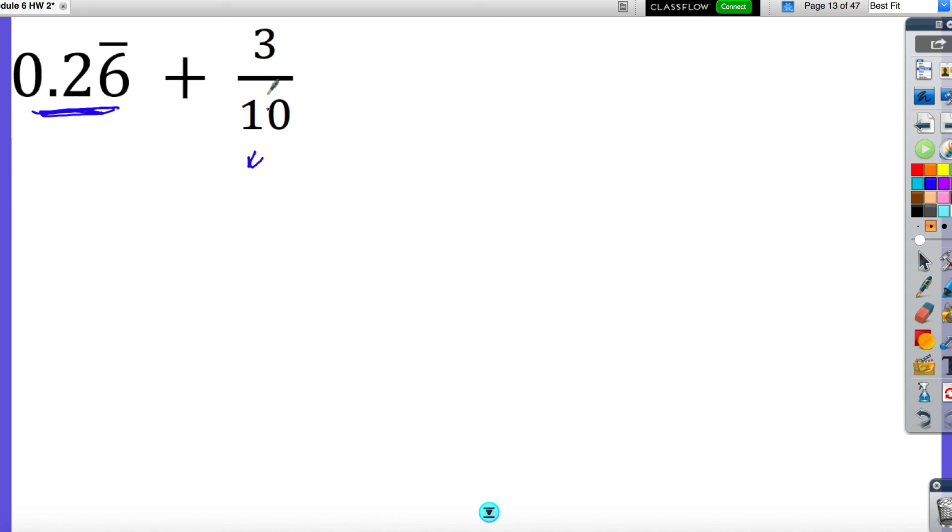which is turn this into a decimal, 0.3 plus 0.26 repeating. So I'm going to add up the tenths value to get 0.56 with the 6 repeating, and that's going to equal my decimal that I need to turn into a fraction.